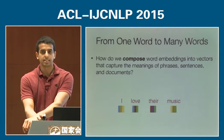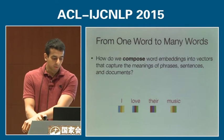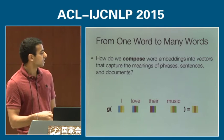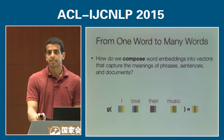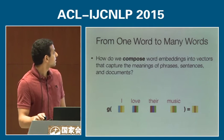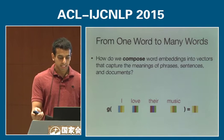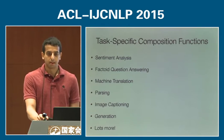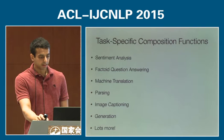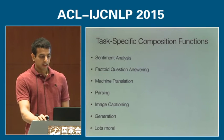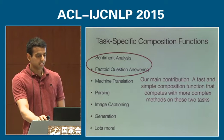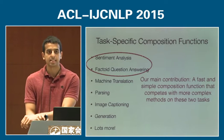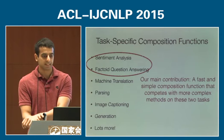For example, if we have the sentence 'I love their music,' we're interested in learning this composition function G that takes as input the four embeddings associated with the sentence and outputs a single vector representing the meaning of that sentence. We look at meaning as being task-specific — a phrase's representation might say one thing for sentiment analysis and a totally different thing for parsing. In this work, we're focused mainly on sentiment analysis and factoid question answering, and our main contribution is a fast and simple composition function that rivals more complex methods on both of these tasks.